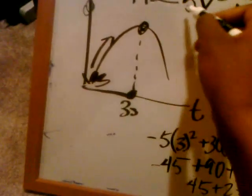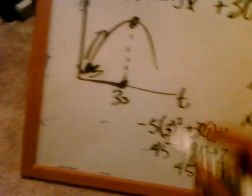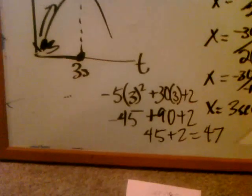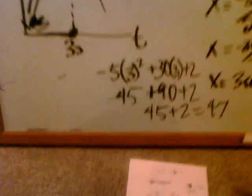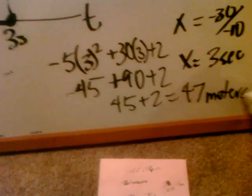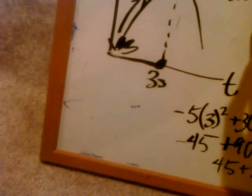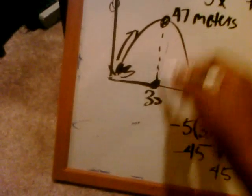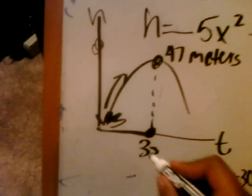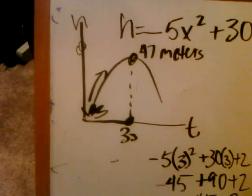We're going to actually measure this in meters because we have negative 5 for our coefficient. You don't need to really worry about that right now. All we're really trying to find out is what the height was. And so we're going to say, well, this height is 47 meters at a time of 3 seconds. So it reached 47 meters at its maximum height, took 3 seconds to get to 47 meters.